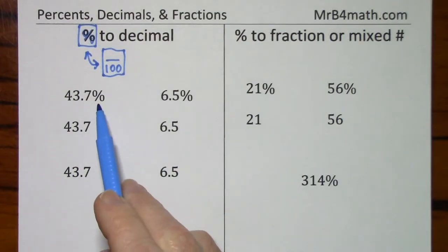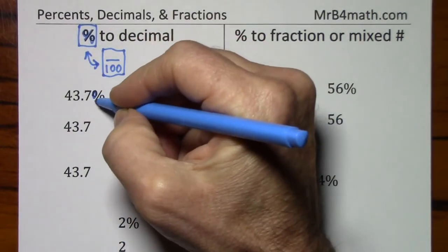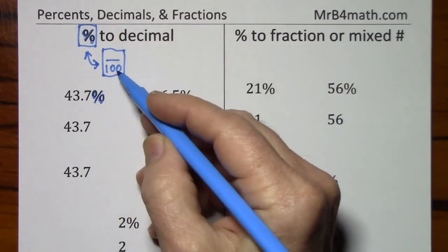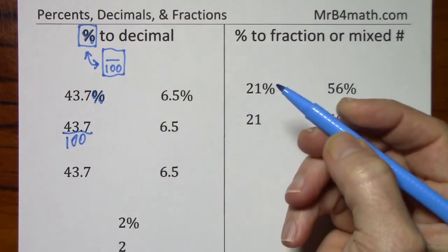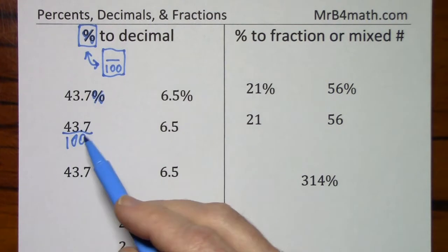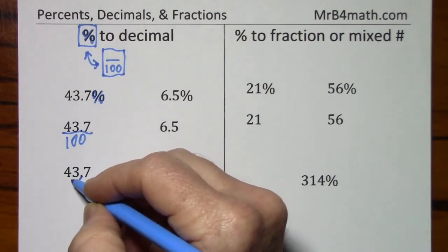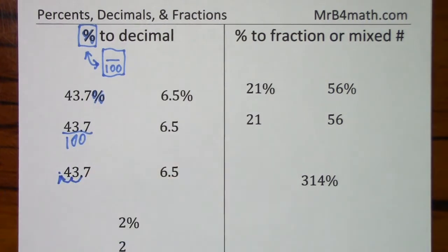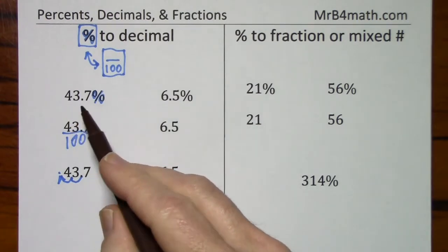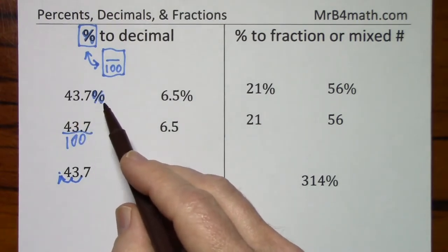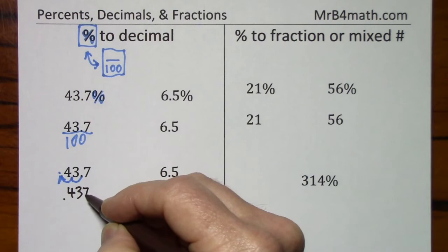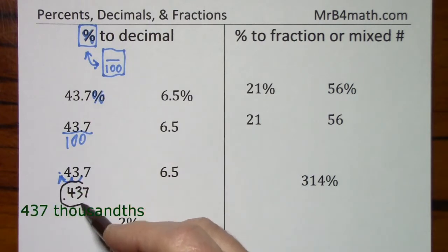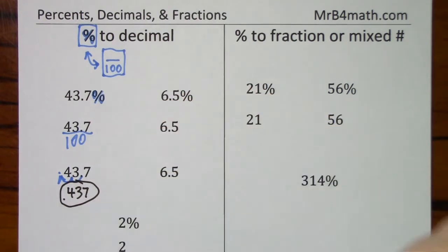So if they want me to get rid of this percent sign, understanding what it means per 100, I can just write it this way instead. When you have a decimal and you divide by 100, you simply move the decimal two spaces to the left. So if you have 43.7%, that's the same thing as 437 thousandths. These two representations are the same value, they just look different.